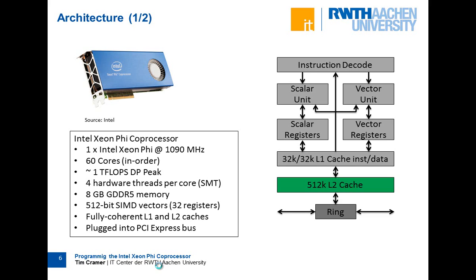The peak performance is around one teraflop of double precision, which is quite a lot for such a small card. Importantly, you have four hardware threads per core - so-called hyper-threads - giving 240 threads in total. For many HPC applications you don't benefit from hyper-threads on normal Xeons, but this is different for Xeon Phi: to get reasonable performance you have to use at least two threads per core, so at least 120 threads, in order to saturate the pipeline stages.